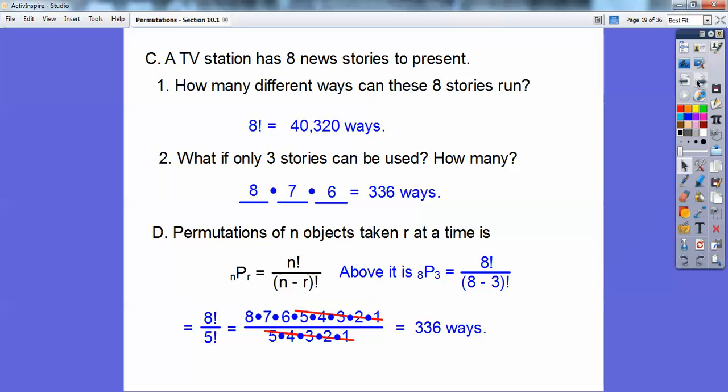Now when I'm doing that, there is an nPr program on your calculator. It should be right around nCr, either right above it or to the left of it. On my calculators at school, it's right above the nCr, and nCr is the next lesson on combinations. So 8 factorial over 5 factorial, I just do 8 times 7 times 6, and I stop at 5 factorial because there's 5 factorial on top and bottom. They cancel each other out.